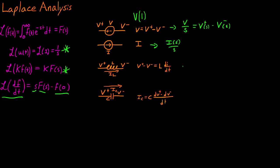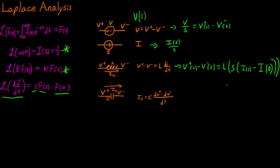For our inductor, this one's a little bit trickier. We have some potential across it equal to the inductance value multiplied by the derivative of current with respect to time. So the Laplace transform gives us V+(s) − V−(s) equal to L multiplied by s·I(s) minus the initial condition, which is the value of current through the inductor at time equal to 0, i(0). That's the Laplace domain equation for the inductor.